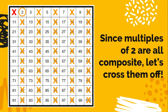So since all multiples of 2 are composite, let's cross them off. I took the same color that I circled 2 with, and I crossed off all of my multiples of 2. So you might want to pause the video, take a minute to do that.